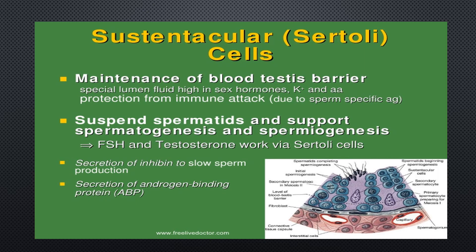The sperm has specific antibodies and the sustenticular cells protect them during sex hormone release. They maintain the blood-testes barrier, produce special luminal fluid high in sex hormones and potassium, and provide protection from immune attack. If external immune system recognizes sperm as foreign antigens, it would trigger an immune reaction.